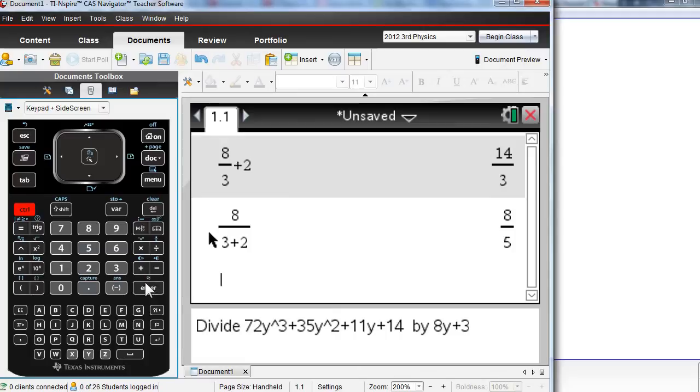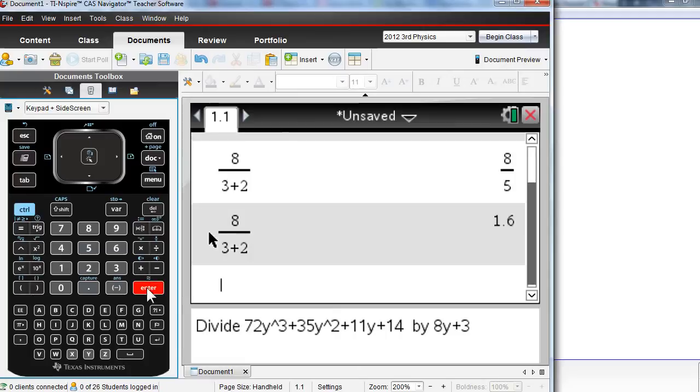Perhaps you wanted to press control and DC just above enter. There's a little squiggly equals. Yes, approximately equals. There you go. There's your decimal approximation.